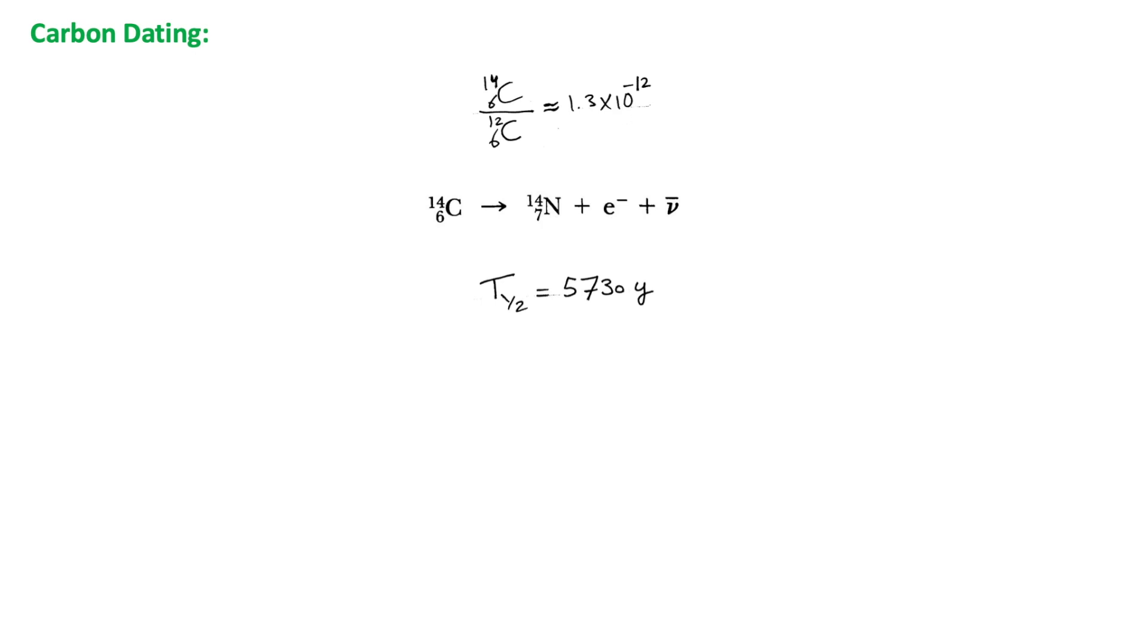When they die, they no longer take in radiocarbon from the environment or food, but the radiocarbon they already contain will keep decaying away to nitrogen. After 5,730 years, they have only one-half as much radiocarbon left relative to their total carbon content as they had as living matter. After 11,520 years, only one-fourth as much, and so on.